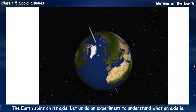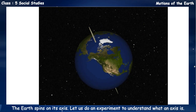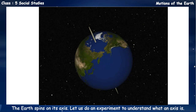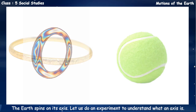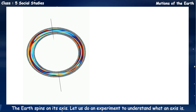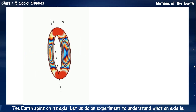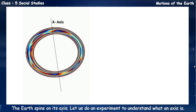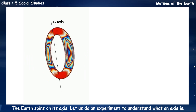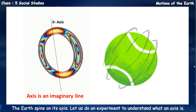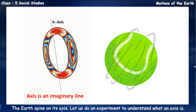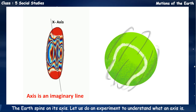The Earth spins on its axis. Let us do an experiment to understand what an axis is. You need a bangle and a table tennis ball. Spin the bangle – you will see a central line around which the bangle spins. This is its axis. The axis does not exist; it is an imaginary line. Now spin the ball – it will also spin around an axis, but you will not be able to see it.